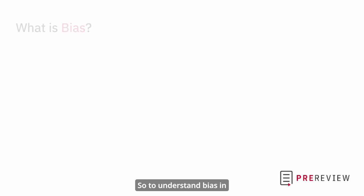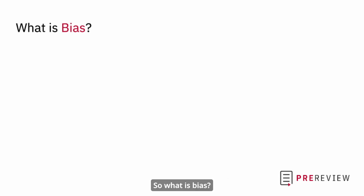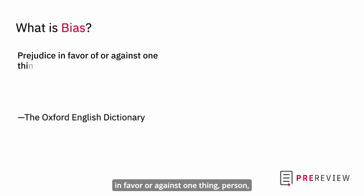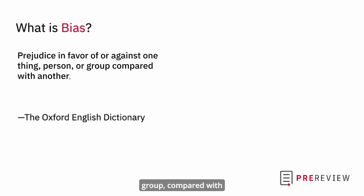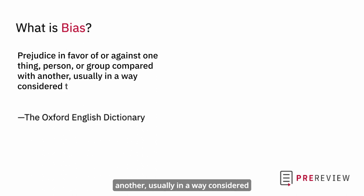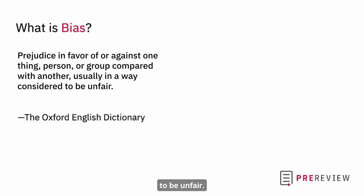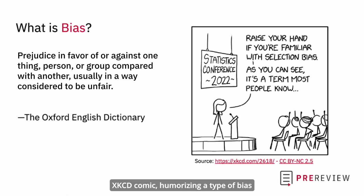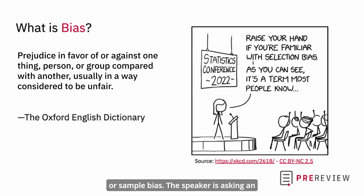To understand bias in the grant review process, we need to start with its definition. The Oxford English Dictionary defines bias as a prejudice in favor or against one thing, person, or group compared with another, usually in a way considered to be unfair. This is a rather popular XKCD comic humorizing a type of bias referred to as selection or sample bias.